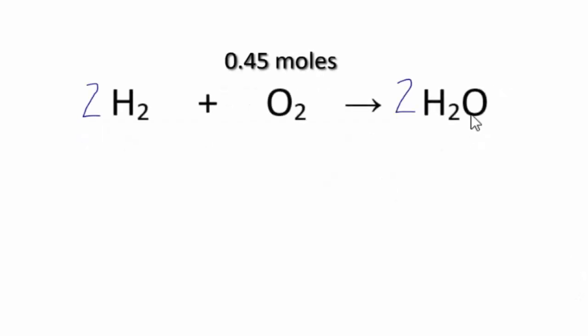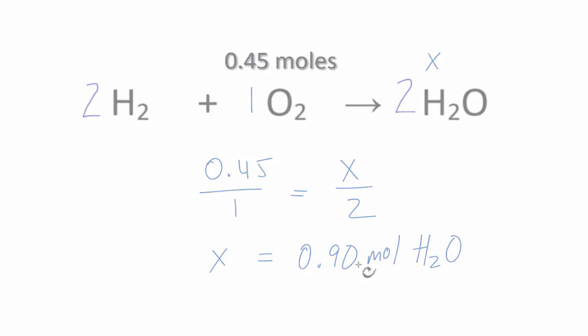You could also figure this out just by setting up a ratio. 0.45 is to 1 as x is to 2. Set that up. 0.45 over 1 equals x over 2. And to solve for x, we can cross multiply. 1 times x, that's x, 2 times 0.45, 0.90, and that would be the moles of H2O, which is what we found before. So this is another way to look at the ratios. That's pretty much it.